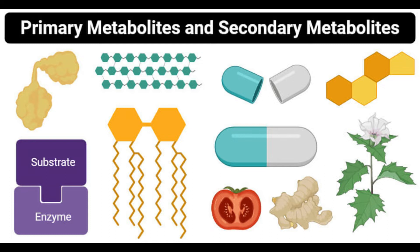These metabolites are associated with the physiological processes occurring in the organism. Primary metabolites are produced in the organism during the growth phase. As a result of the growth mechanism, the growth phase associated with the production of primary metabolites is termed trophophase. The production of primary metabolites is initiated when the nutrients necessary for the body are available in the medium.